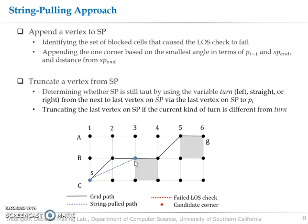When SP starts to turn in a different direction without LOS failure, then it is no longer taut and we remove the last vertex from it to make SP taut again. In order to do that, we use a variable turn that keeps the kind of turn of SP, which is categorized in either left, straight, or right. For example, when B3 is appended to SP, the resulting turn of C1, B3, B4 is right direction, and it is recorded in the variable turn.